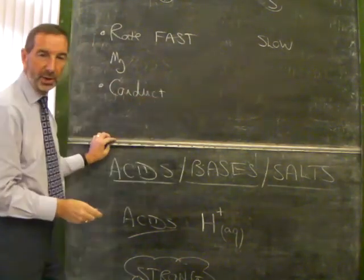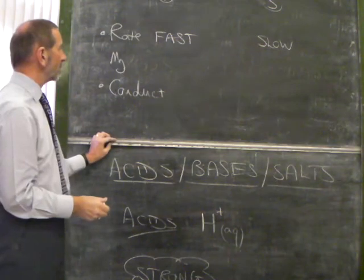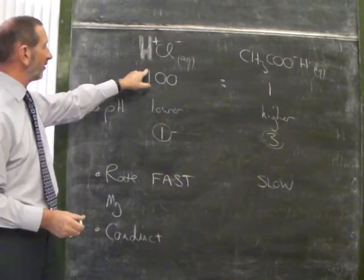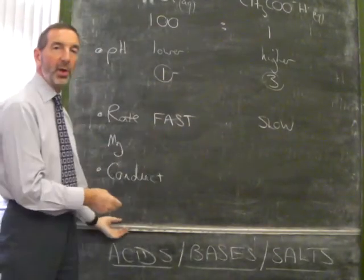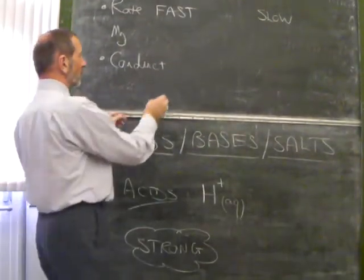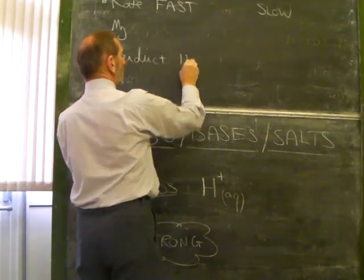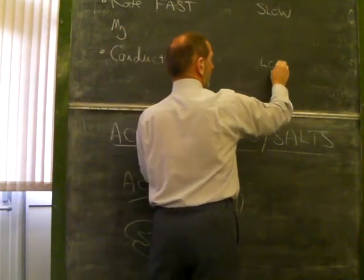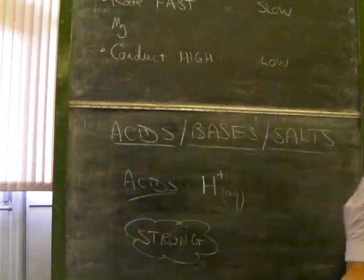How about conductivity? How would you compare when you came to conducting electricity? Well, again, as you'd expect, the strong acid, which is full of ions, will be a far better conductor than the weak acid, which has far fewer. So, conductivity of the strong acid is high, high value. In comparison, the weak acid is low.